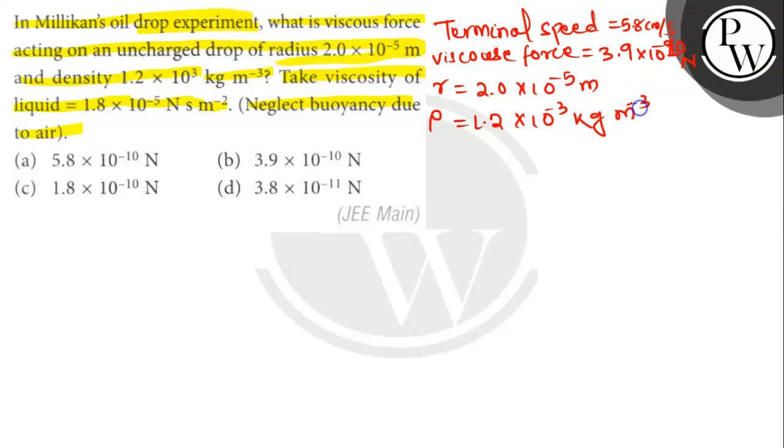Viscosity of air η is equal to 1.8×10⁻⁵, which is also written as N·s per meter square.